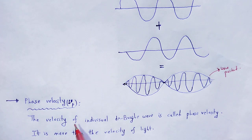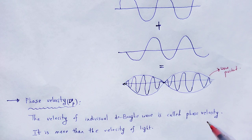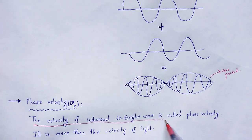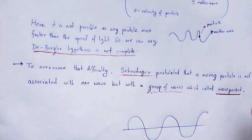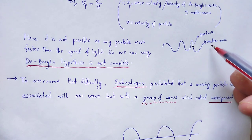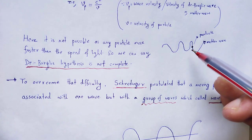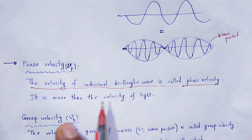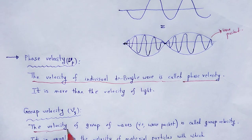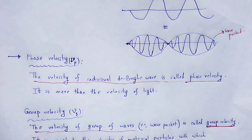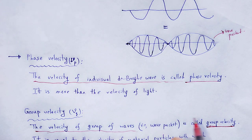What is phase velocity? The velocity of the individual de Broglie wave is called phase velocity — it is more than the velocity of light. The particle is associated with a wave called matter wave or de Broglie wave; since it is a wave it has a velocity, and that velocity is called phase velocity. What is group velocity? The velocity of the group of waves — we call it a wave packet — is called group velocity, and the velocity of the group of waves is equal to the particle velocity, as we will mathematically show later.